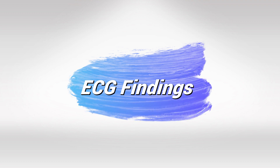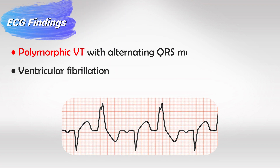In the ECG, you will see that the QRS complexes are not all the same — this is where the word polymorphic comes from. You will have different shapes of each ECG pattern, and each QRS complex has the potential to look different from the one before and after it. This can quickly develop into ventricular fibrillation, so early recognition is very important.